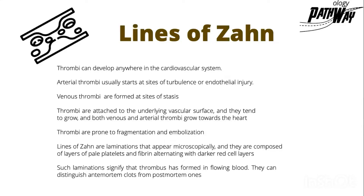We will start first by the thrombi, and to know that thrombi can develop anywhere in the cardiovascular system. We have two types of thrombi — arterial and venous. Arterial thrombi usually start at sites of turbulence or endothelial injury, while venous thrombi are formed at sites of stasis. Thrombi are attached to the underlying vascular surface and they tend to grow. Both venous and arterial thrombi grow towards the heart, so venous thrombi will grow with the blood flow direction, while the arterial one will grow retrograde.